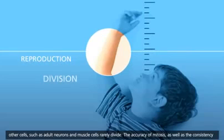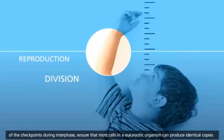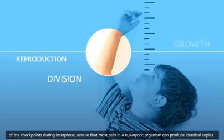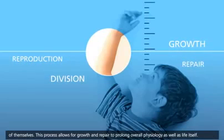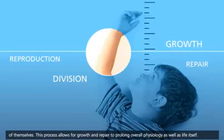The accuracy of mitosis, as well as the consistency of the checkpoints during interphase, ensure that most cells in a eukaryotic organism can produce identical copies of themselves. This process allows for growth and repair to prolong overall physiology as well as life itself.